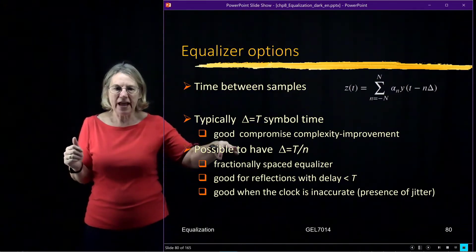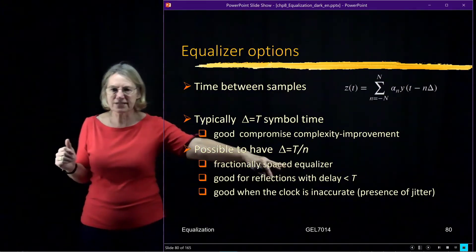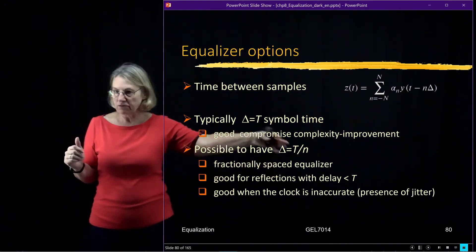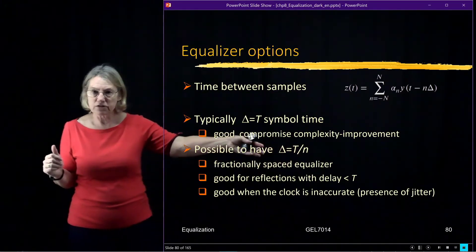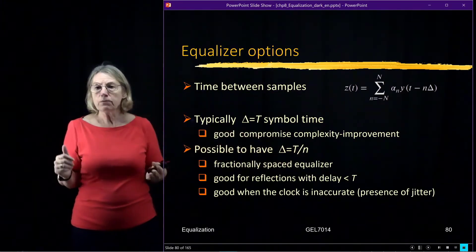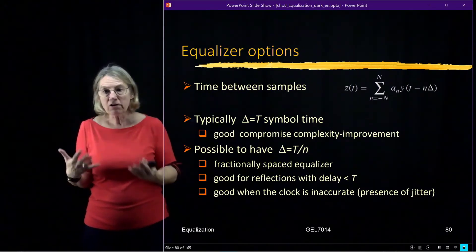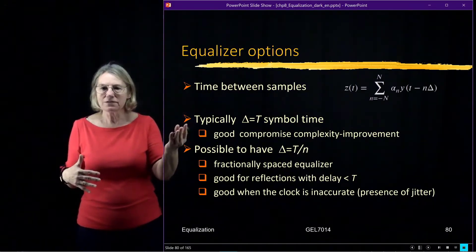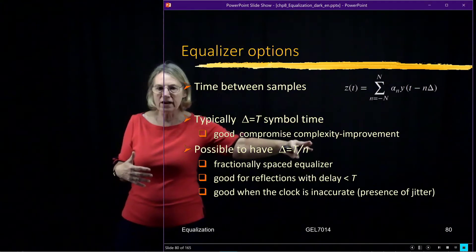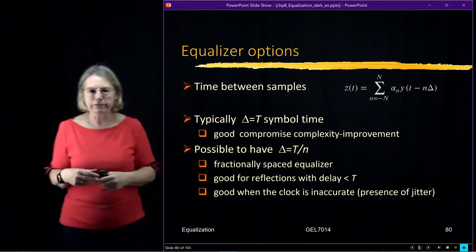So it's possible to have what we call fractionally spaced equalizers. And the typical fractionally spaced would be two times oversampling. And that will give you better performance. It does better. But of course, it's a big up in complexity. So there's this trade-off between complexity and improvement in performance.